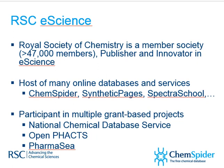A number of our online databases and services produced by the e-science team, such as ChemSpider, ChemSpider Synthetic Pages, and Spectra School, are very well known. Spectra School is used a lot by educators and students. ChemSpider is used across the world by people sourcing information about chemicals. We also participate in a number of grant-based projects. The National Chemical Database Service delivers a platform to UK academics. We have a semantic web project called Open FACTS — standing for a pharmacological concept triple store — integrating chemical and biological data primarily for the pharmaceutical industry. And Pharmacy, a project to harvest, identify, and database the data associated with new natural products extracted from the oceans.